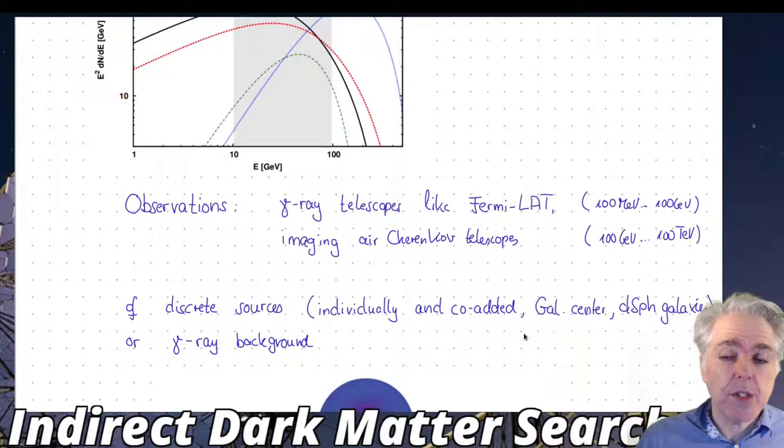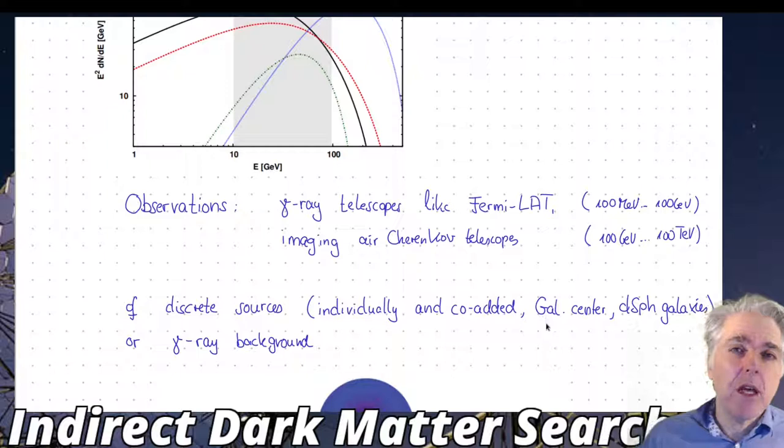There's also the galactic center. The situation is different even though the dark matter density is the highest there. The problem is that the galactic center has other activities happening. There's a supermassive black hole there, gamma ray emission coming from neutron stars, so it's very difficult to disentangle what the contributions are. The foreground emission from astrophysical processes makes it difficult to find a gamma ray signal if it is present from dark matter annihilation.